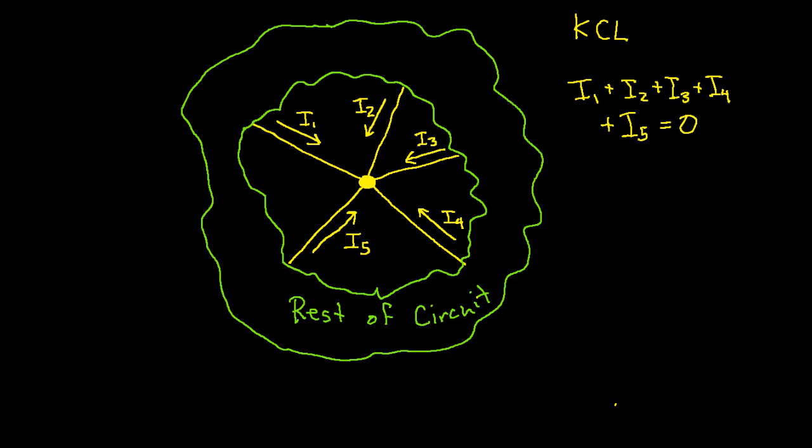Another way of writing KCL would be the following. Suppose I have drawn some of the currents in the opposite direction. So for example, I've drawn I1 and I2 as flowing into the node, but I3 is flowing out, I4 is flowing in, I5 is flowing out. I can write KCL for this situation as I1 plus I2 plus I4 is equal to I3 plus I5. In words, the sum of the currents entering the node is equal to the sum of the currents leaving the node.